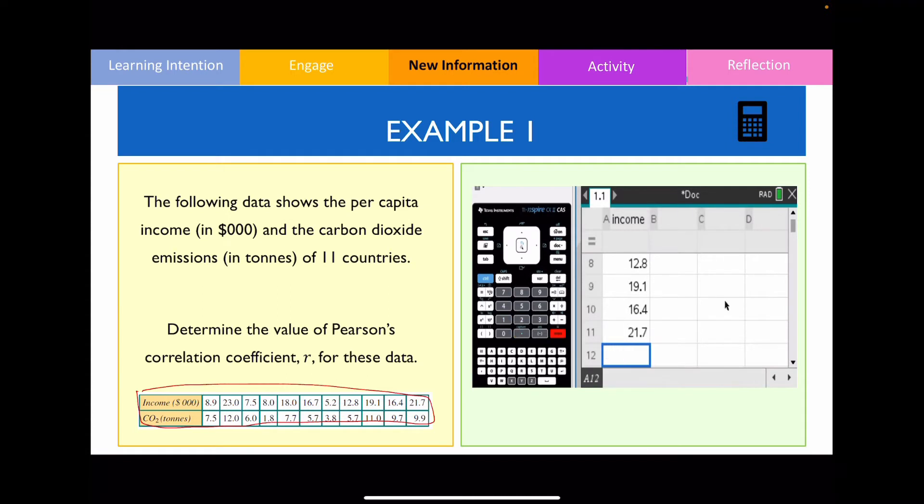Remember the explanatory variable impacts the response variable, so in this example it makes more sense for the income to impact carbon dioxide emissions. So that's going to be explanatory variable, that's going to be my response variable. Remember that's plotted along the x-axis, that's plotted on the y-axis.